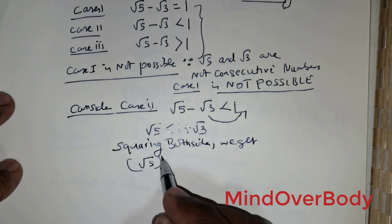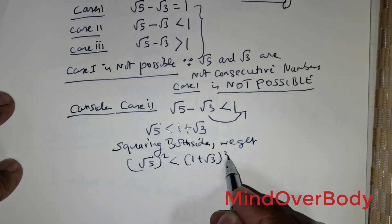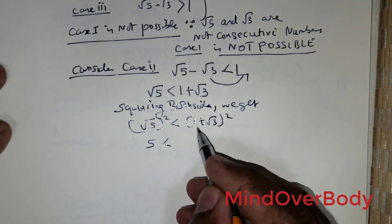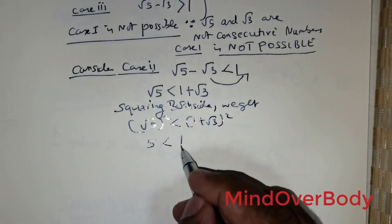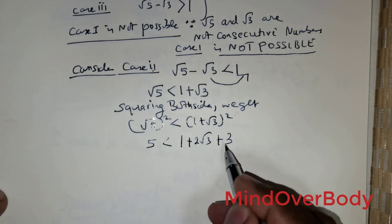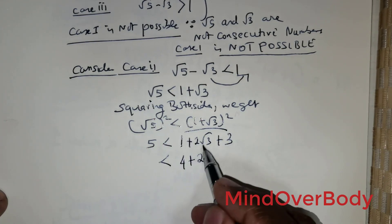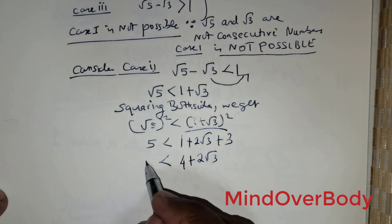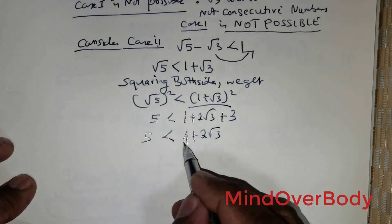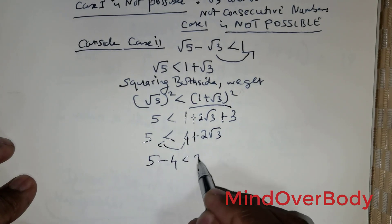Squaring both sides, we get root of 5 squared less than (1 plus root of 3) squared. Root of 5 squared gives 5. Expanding the right side gives 1 plus 2 times root of 3 plus root of 3 squared, which is 1 plus 2 root 3 plus 3, giving us 4 plus 2 root of 3.